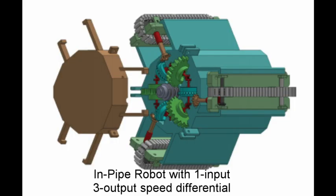Since then we have also developed a 1-input and 3-output passive differential that we have filed for a patent. This would help the robot negotiate elbows passively more smoothly without the need to calculate the exact module speeds.